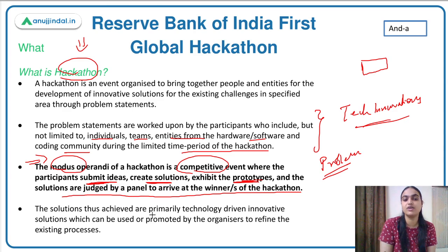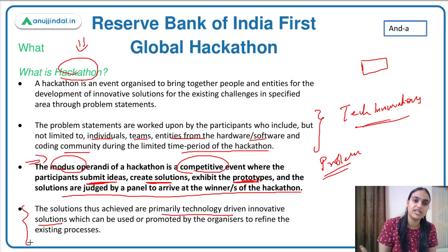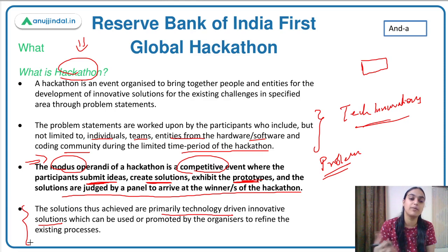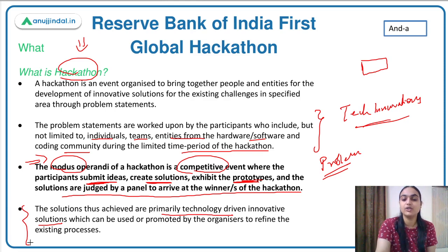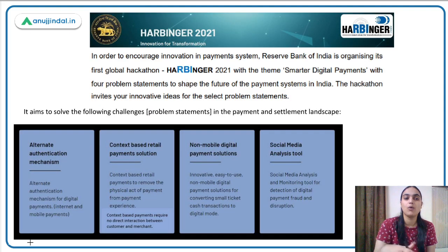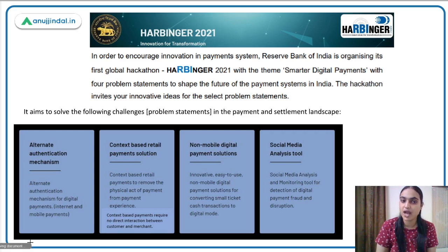The solutions achieved are primarily technology-driven and innovative. Hackathons are mostly used when there is a need to improve some process using technology-related solutions. Harbinger is the hackathon owned and organized by RBI.